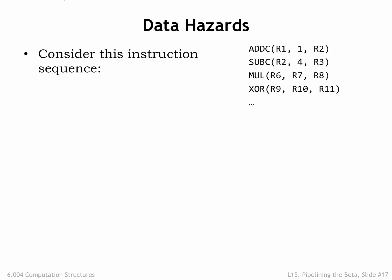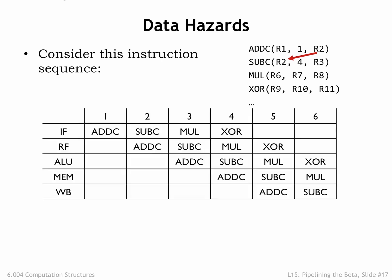Now let's see what happens when there are data hazards. In this instruction sequence, the ADDC instruction writes its result in R2, which is immediately read by the following SUBC instruction. Correct execution of the SUBC instruction clearly depends on the results of the ADDC instruction. This is what we'd call a read-after-write dependency. This pipeline diagram shows the cycle-by-cycle execution where we've circled the cycles during which ADDC writes R2 and SUBC reads R2.